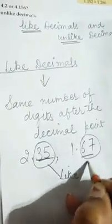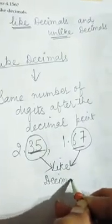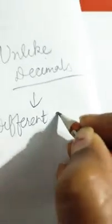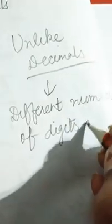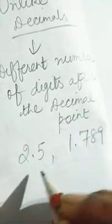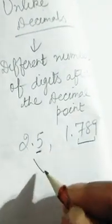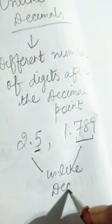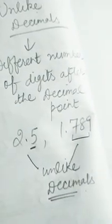Now next are unlike decimals. Unlike decimals have a different number of digits after the decimal point. For example, 2.5 and 1.789 — here one digit after decimal, here three digits — so these are unlike decimals.